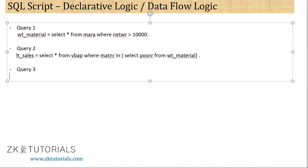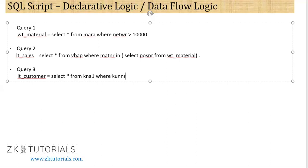One more select query — query 3. And this will be for the customer. Select star from — let's say — select customer, KNA1. Where KUNNR in...